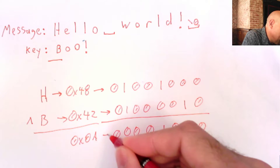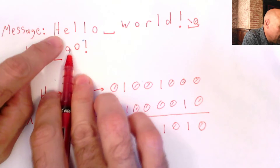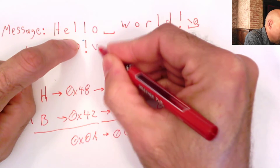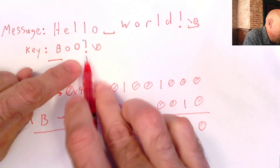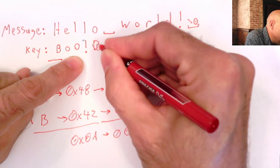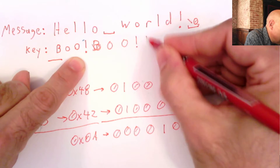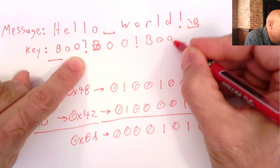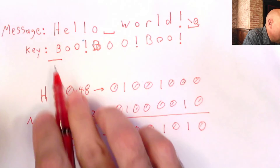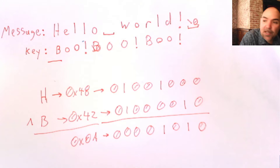We XOR each character of the message with the corresponding key character: H with B, E with O, L with O, L with exclamation mark, and so on. When we get to the end of the key, we reset back and start with B again — so the key repeats: B, O, O, exclamation mark, B, O, O, exclamation mark. We continue until we hit the null at the end of the message.